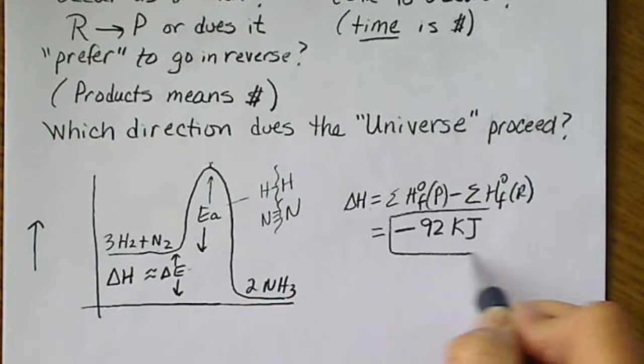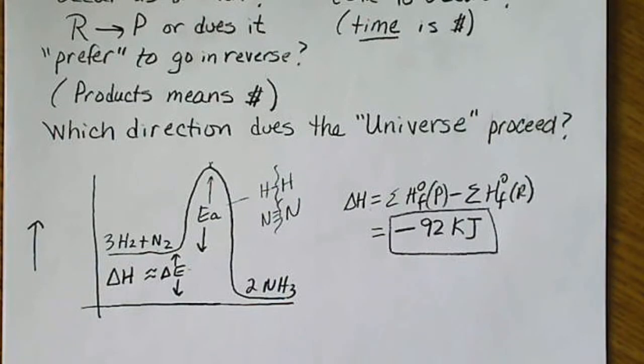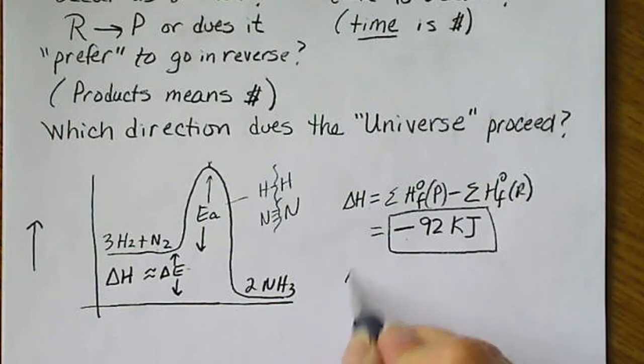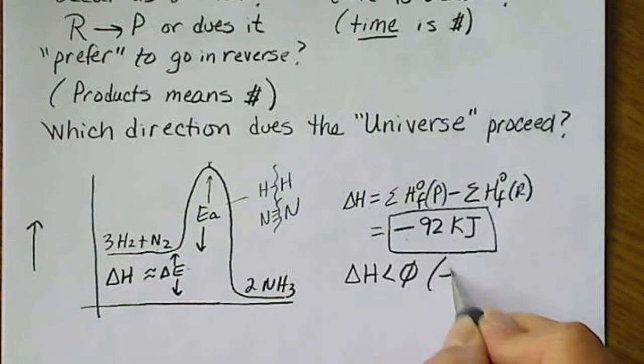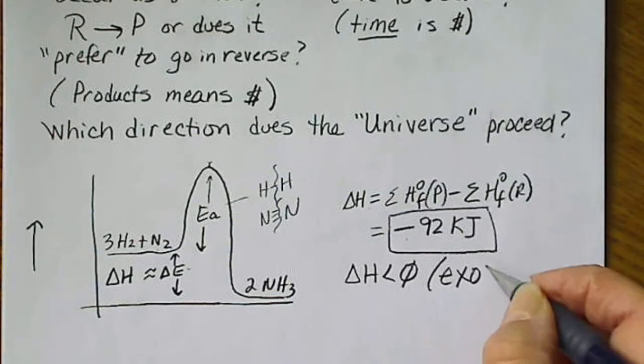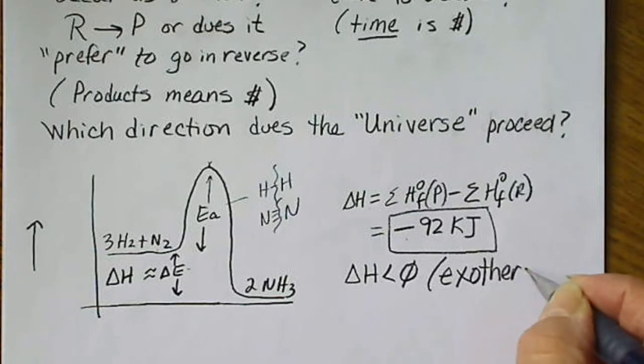And we've done that in previous slides, so I don't want to actually do that here. But the point I'm trying to make is we have an exothermic reaction because the value is negative. So if heat is given off during the reaction, we say that that is exothermic.